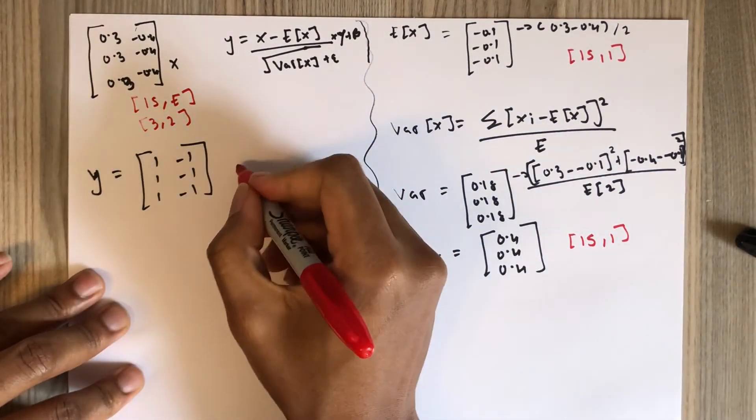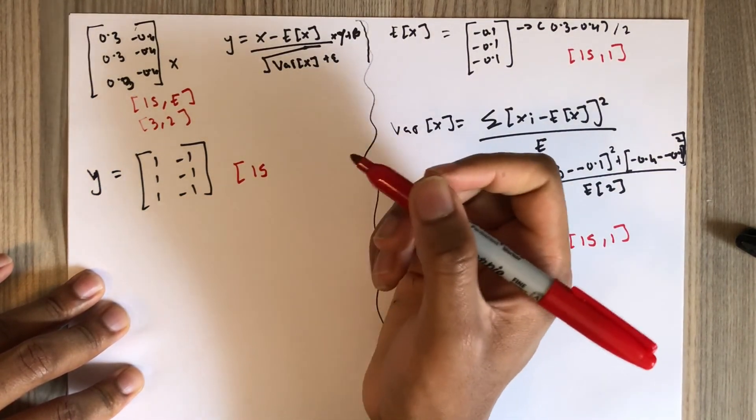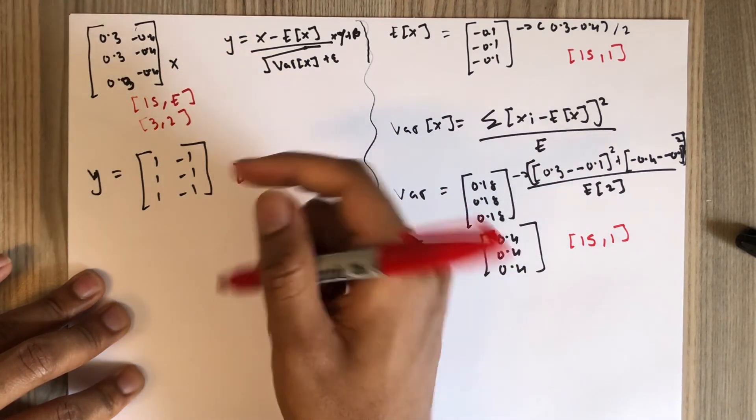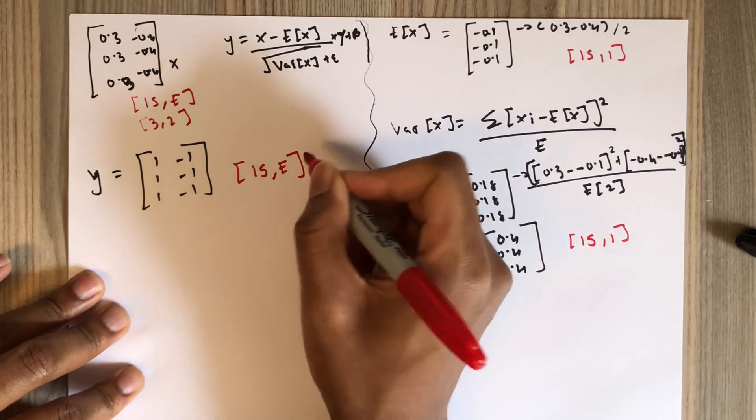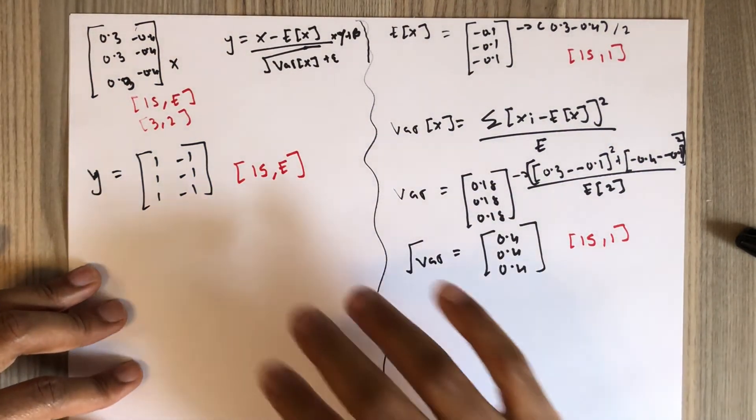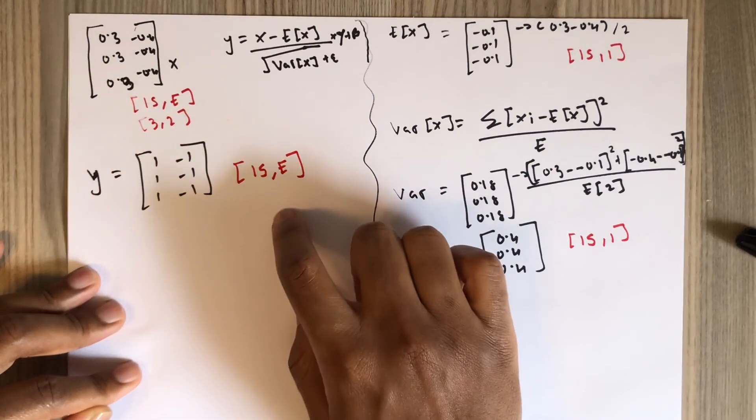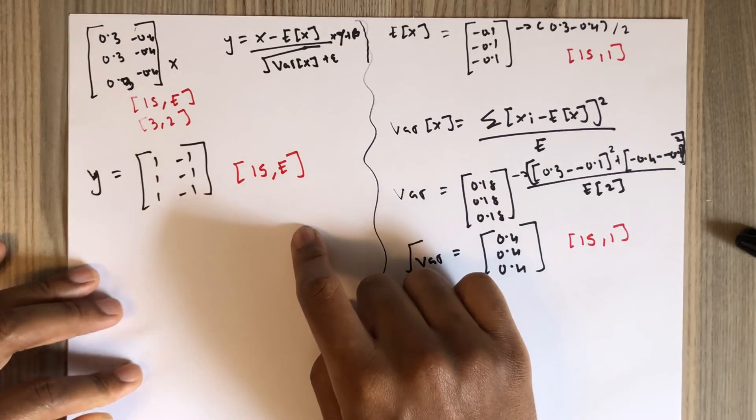The layer normalization output dimension is IS by E. This is the output of the layer normalization, and this is the output of the transformer encoder.